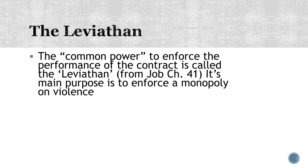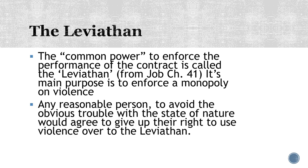This is a really clever solution — and it's the solution we mostly use to get out of these Hobbesian traps and prisoner's dilemmas. We have an authority that has the power to levy fines and punish transgressors. You make some rules, and then you make somebody to enforce those rules for everybody — and then our agreements actually matter; somebody can hold us to our contracts. Hobbes called this power the Leviathan — essentially a government. Its main purpose is to enforce a monopoly on violence: nobody gets to use violence except the Leviathan.